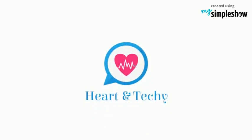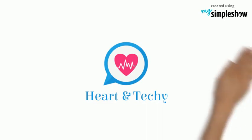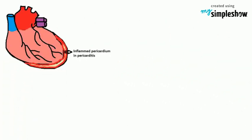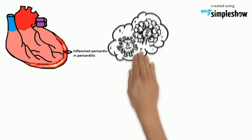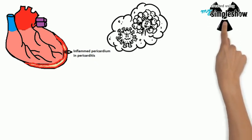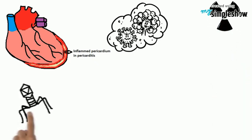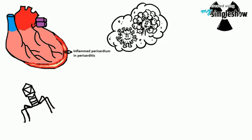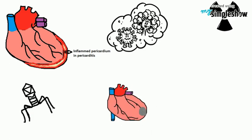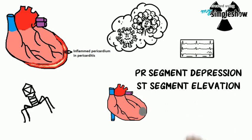Pericarditis ECG changes. Pericarditis is the inflammation of the pericardium. Acute pericarditis is caused by infective, autoimmune, neoplastic, radiation injury, or metabolic causes. Viral infection is the most common cause of pericarditis. Pericarditis in acute myocardial infarction is due to local pericardial inflammation. The main ECG changes in pericarditis are PR segment depression and ST segment elevation.